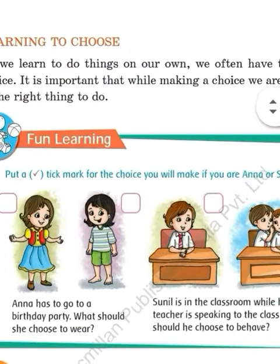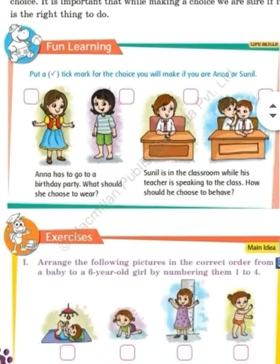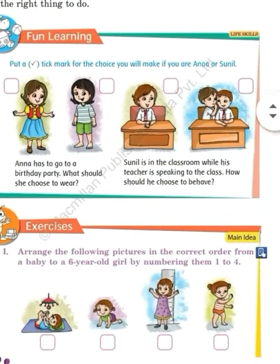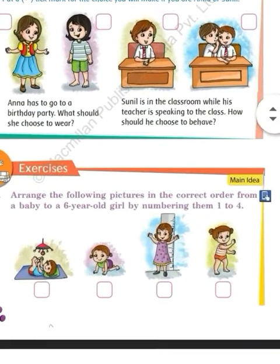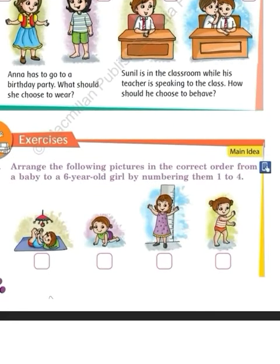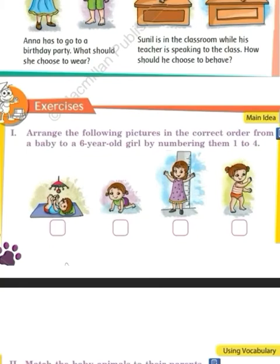Neeche exercises diye hue hain. First question: arrange the following pictures in the correct order from a baby to a six-year-old girl by numbering them one to four. Neeche jo picture diya hua hai, usko dekhte hue, jaise jaise bachchi grow kar rahi hai, uske neeche jo box diya hua hai, usme one to four kar dijiyega.